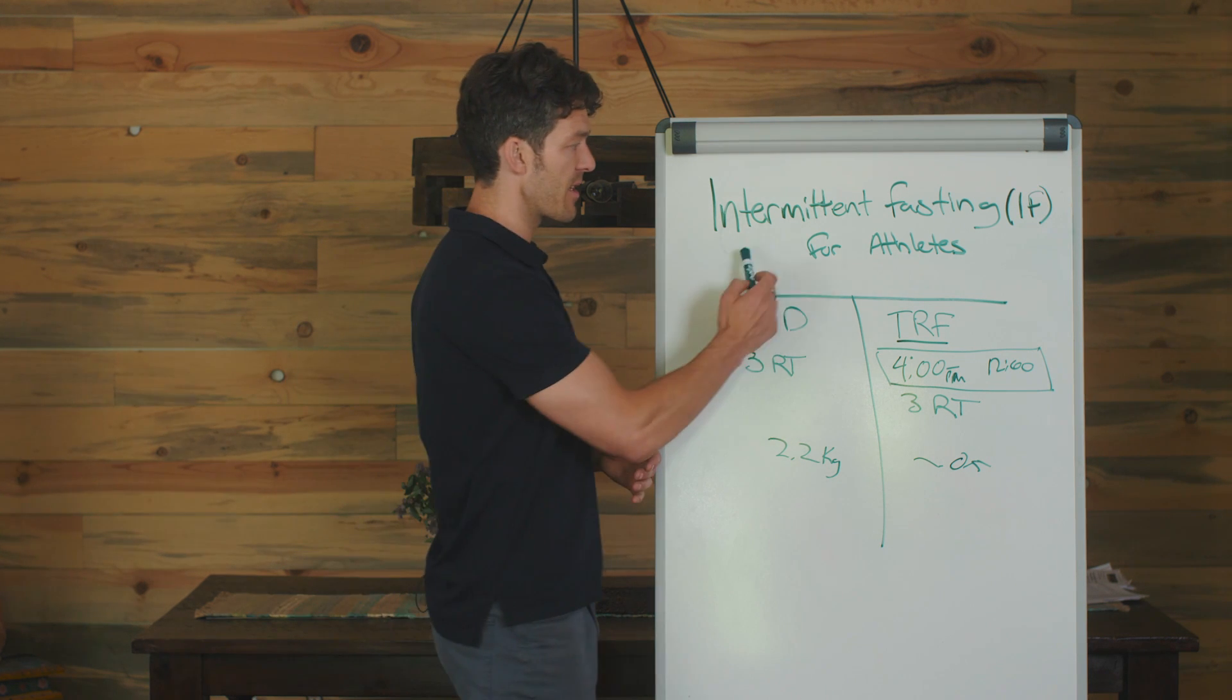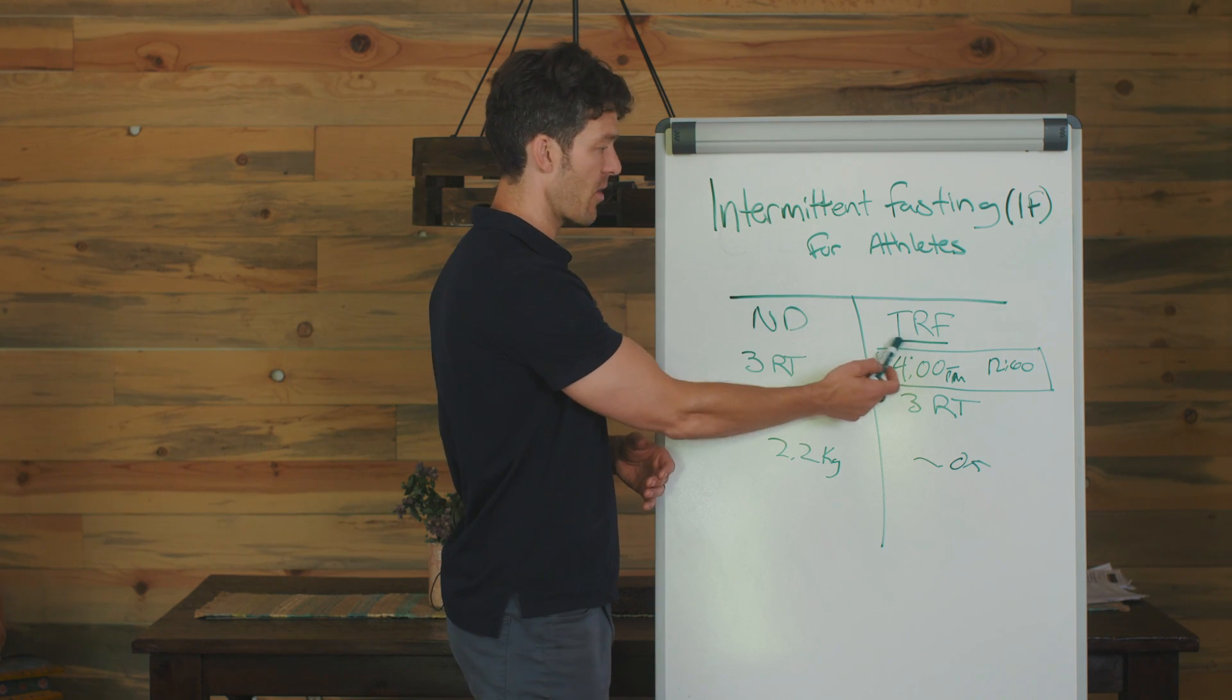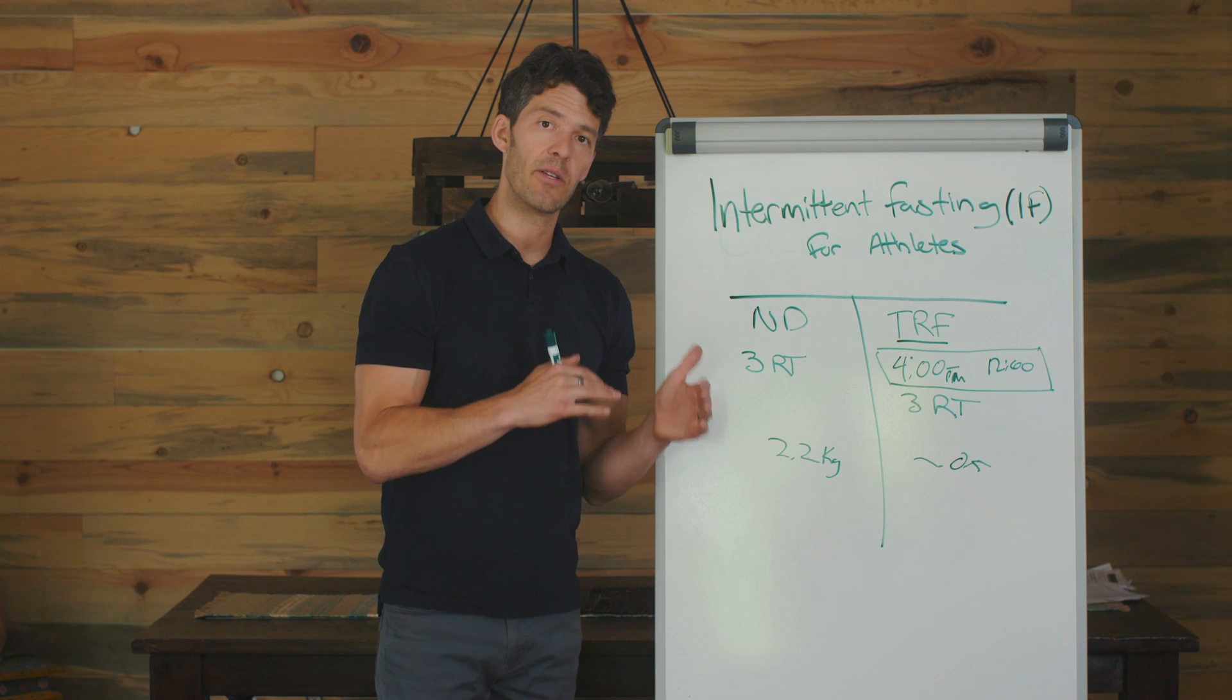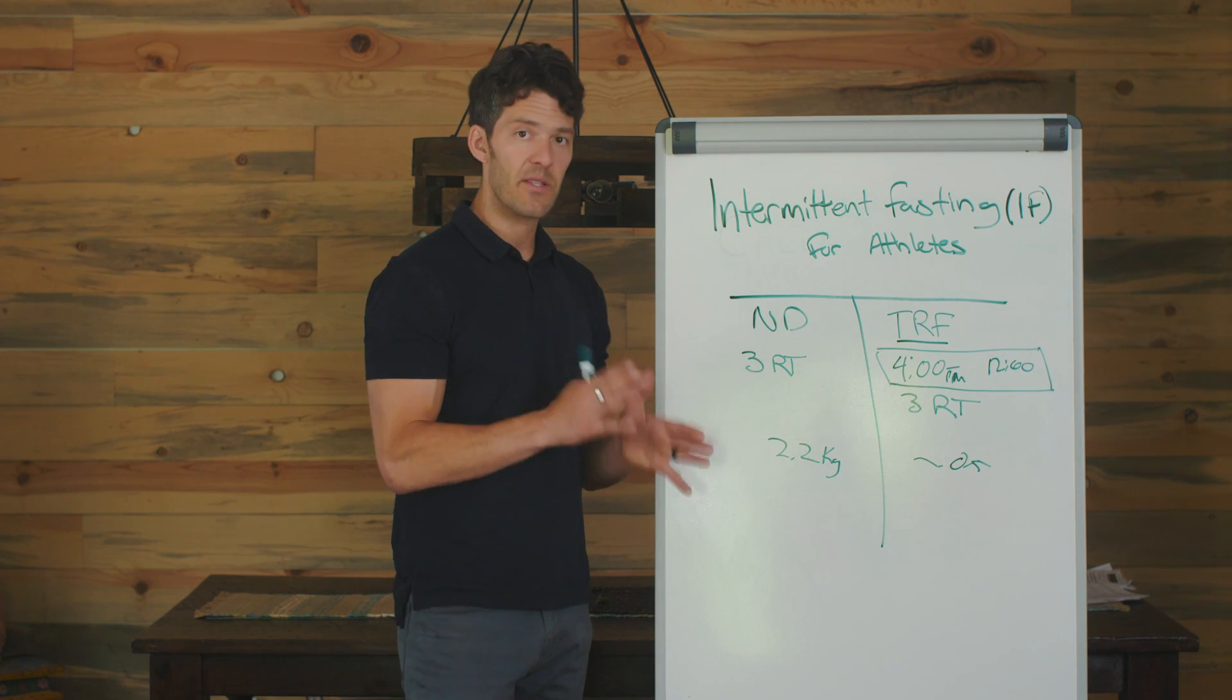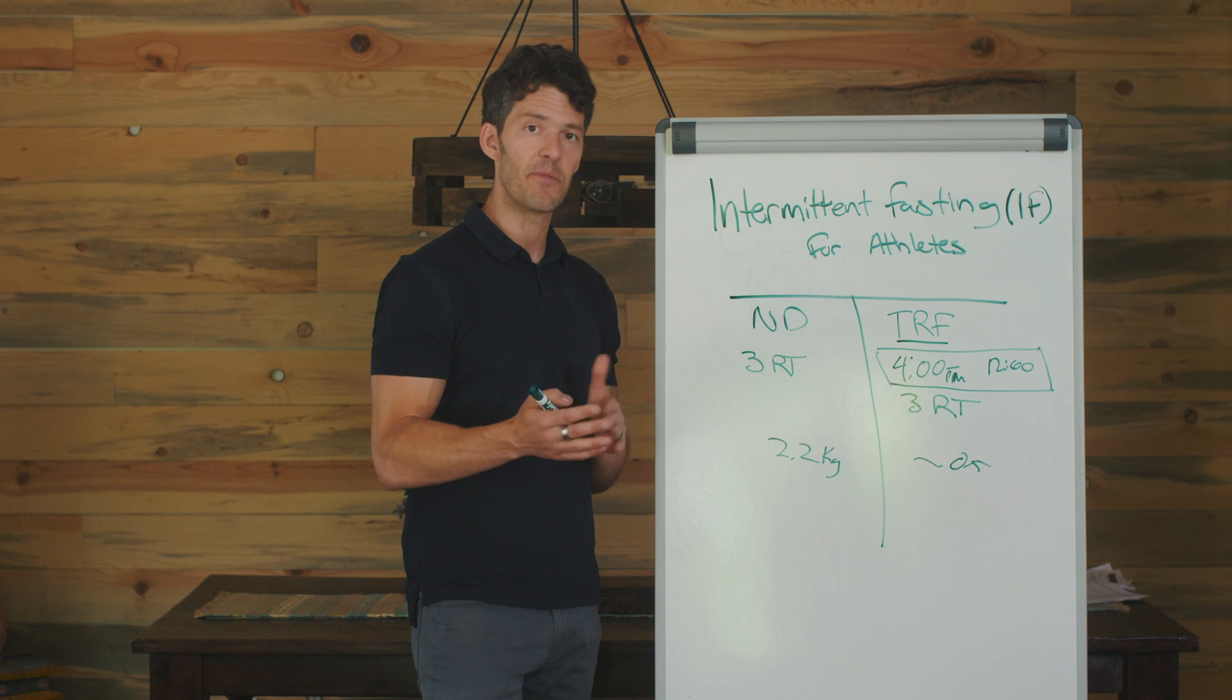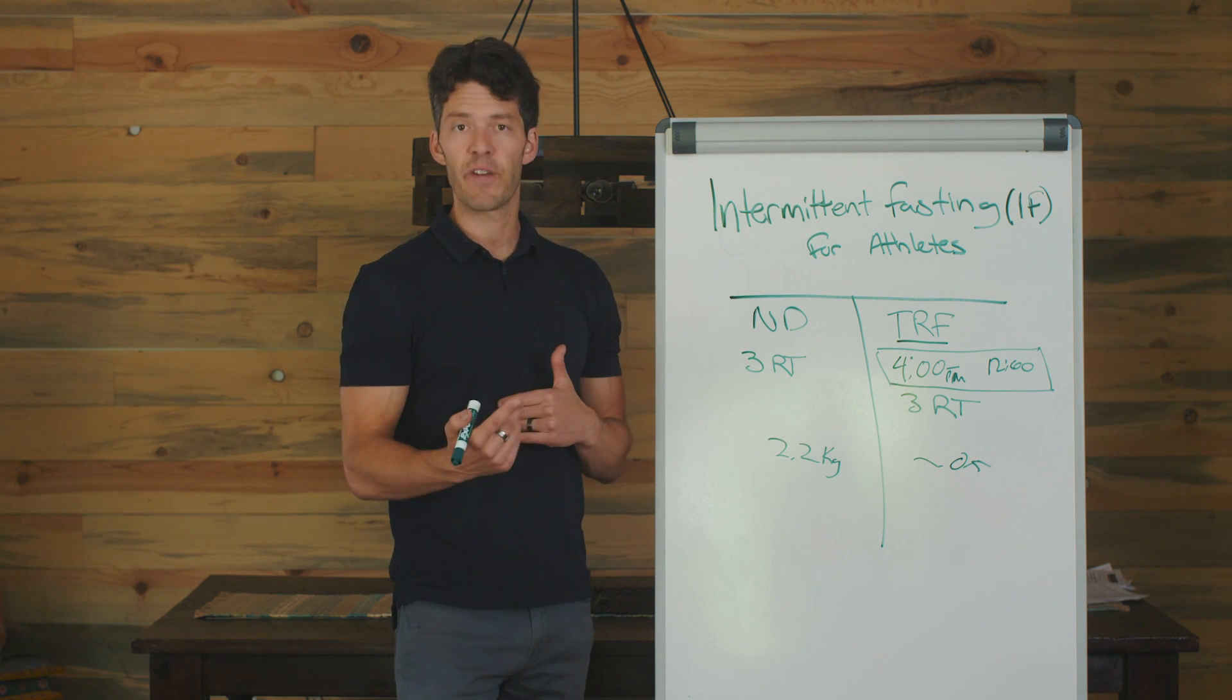My wife does something different. She does a type of intermittent fasting called time-restricted feeding. She only has one meal a day around 4 p.m. So we try to have dinner be done by 6 p.m. She resistance trains around 2 p.m., around 12 to 2. So she finds that to be very effective.